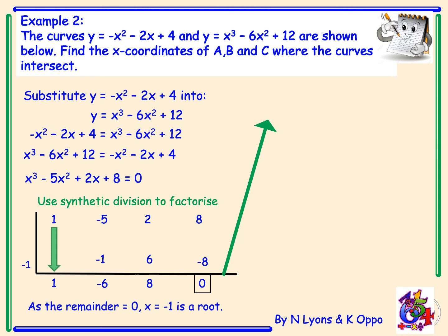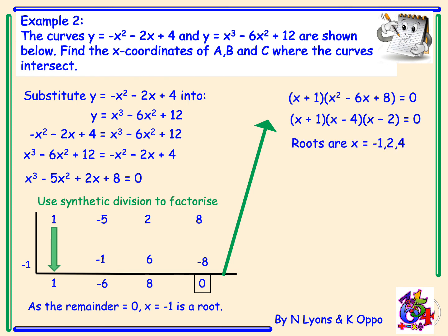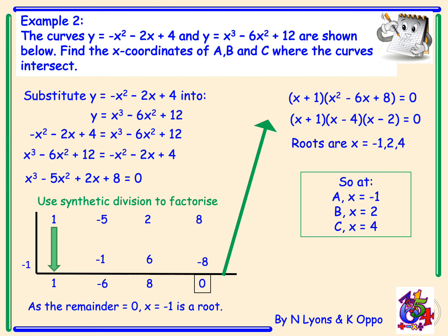As we have a remainder of 0, x equals negative 1 is a root. The factor that goes with this root is x plus 1, and our quotient is x-squared minus 6x plus 8. We equate this to zero and factorise the quadratic to get (x plus 1)(x minus 4)(x minus 2). Therefore the roots are x equals negative 1, x equals 2, and x equals 4. In this question we were only asked for the x-coordinates of a, b, and c: a is x equals negative 1, b is x equals 2, and c is x equals 4.